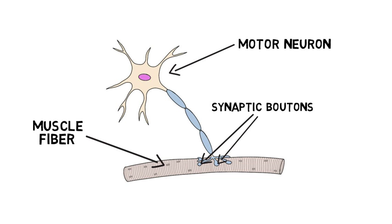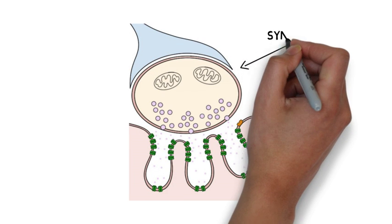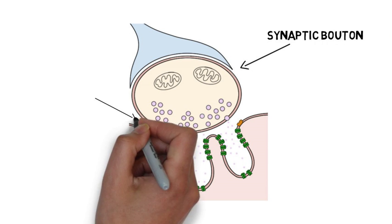These synaptic boutons are situated over a specialized region of muscle called the endplate. The synaptic boutons are separated from the endplate by a space called the synaptic cleft.